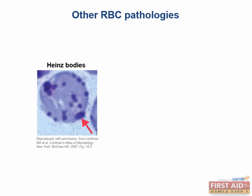Heinz bodies are inclusions in RBCs that are composed of denatured hemoglobin. Heinz bodies are found in disease states where there is oxidative damage to hemoglobin, which includes alpha thalassemia or G6PD deficiency. Of the two, G6PD deficiency is the more commonly tested with Heinz bodies, and as a memory tool, instead of Heinz 57, I've always remembered Heinz G6PD. Heinz bodies only show up after a crystal violet stain, which can be helpful to know because if the question stem mentions this particular stain on a blood smear, they can be hinting at the diagnosis.